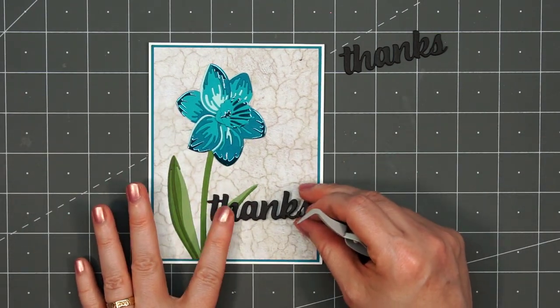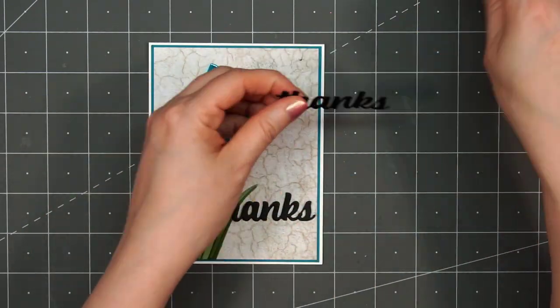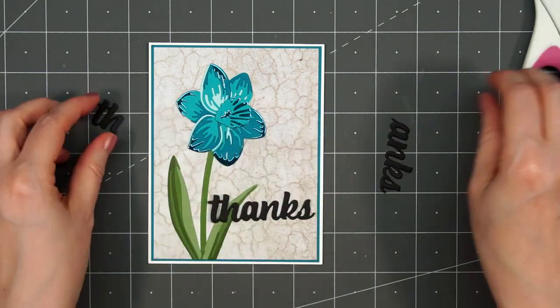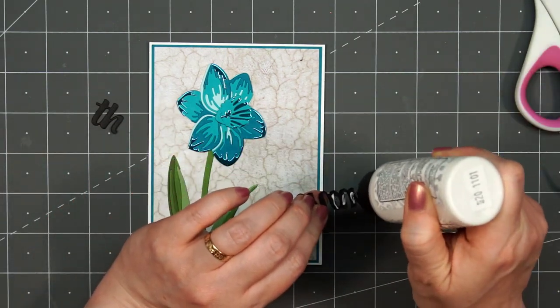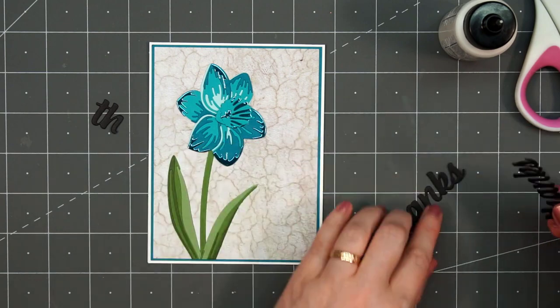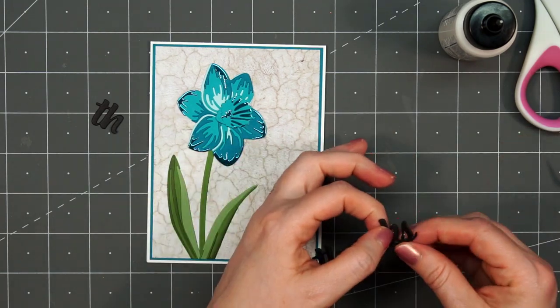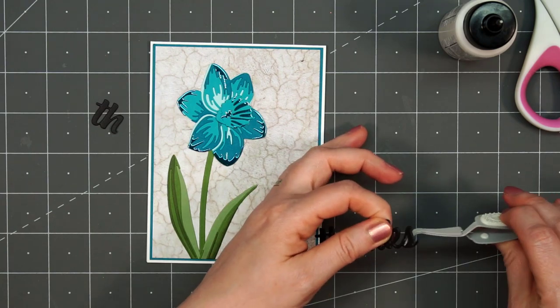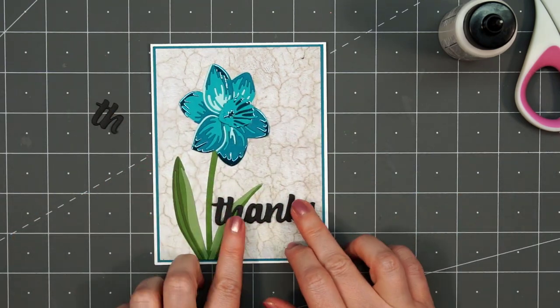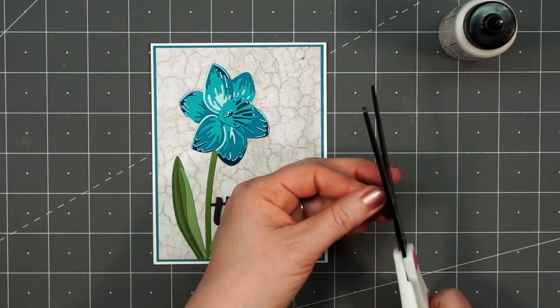For that third word thanks, I'm only using part of it. Since I'll be adhering that word on top of one of the leaves, it'll add just that little extra dimension over the letter H. I cut off the letter T and also the ANKS and just left the H and then added that third layer underneath.